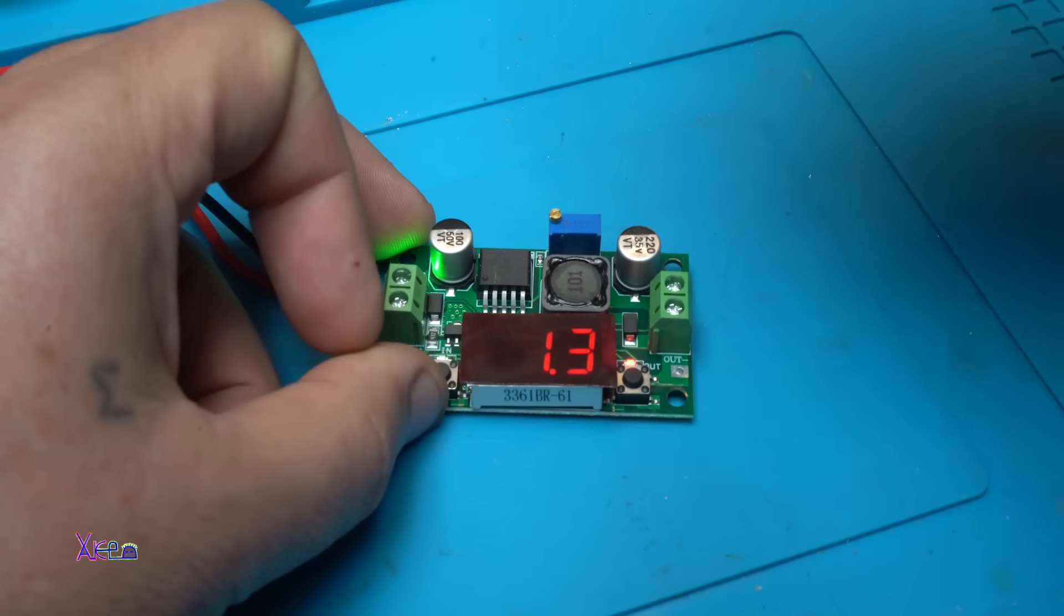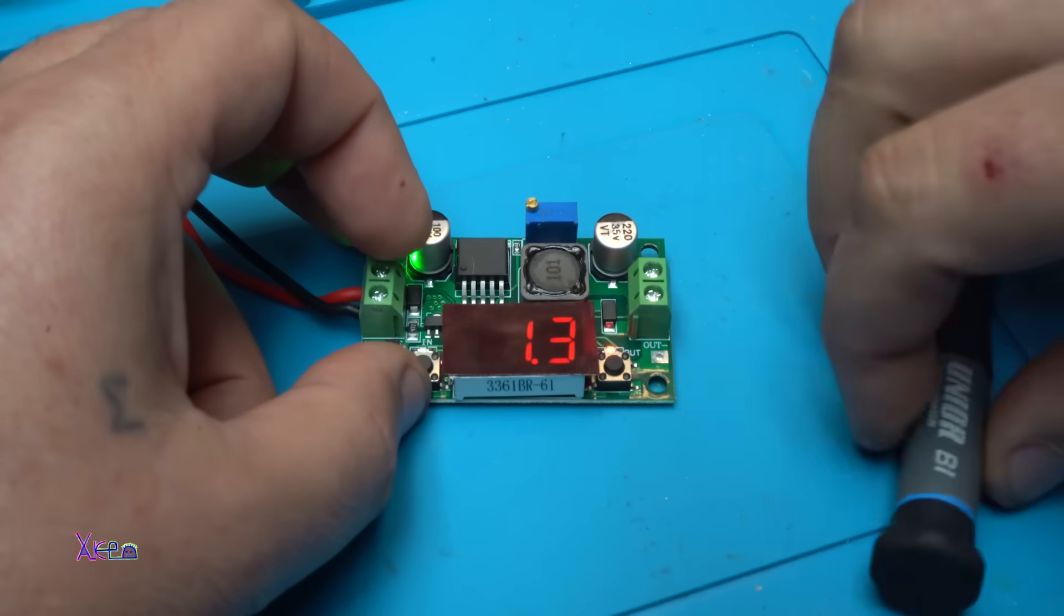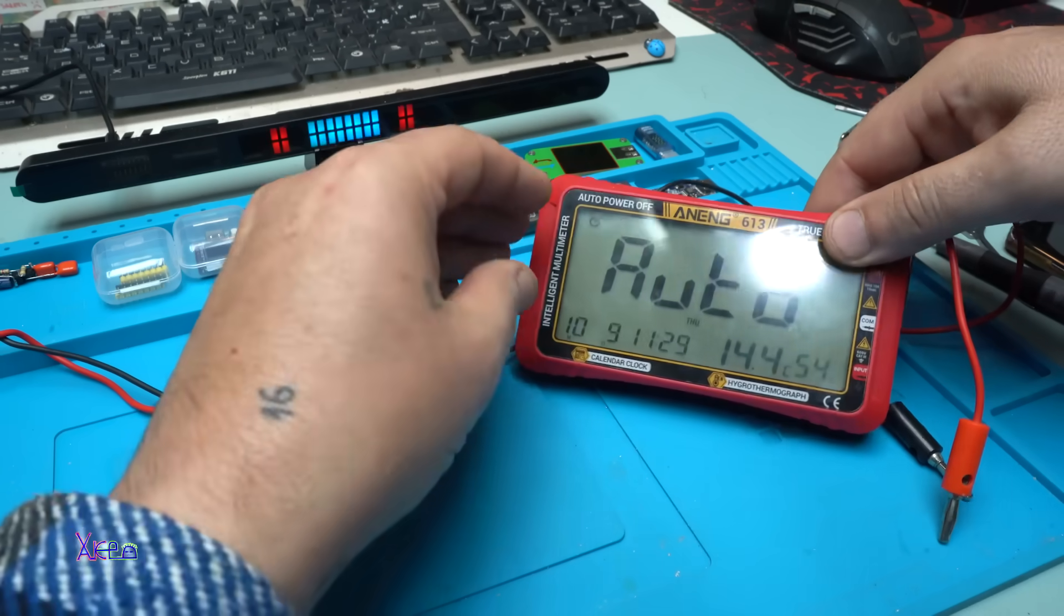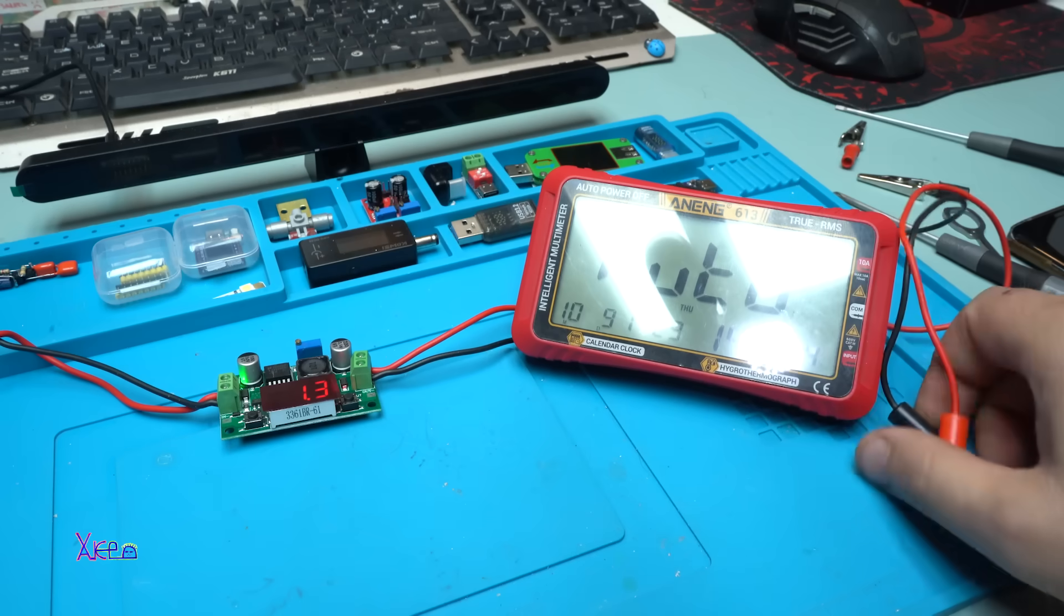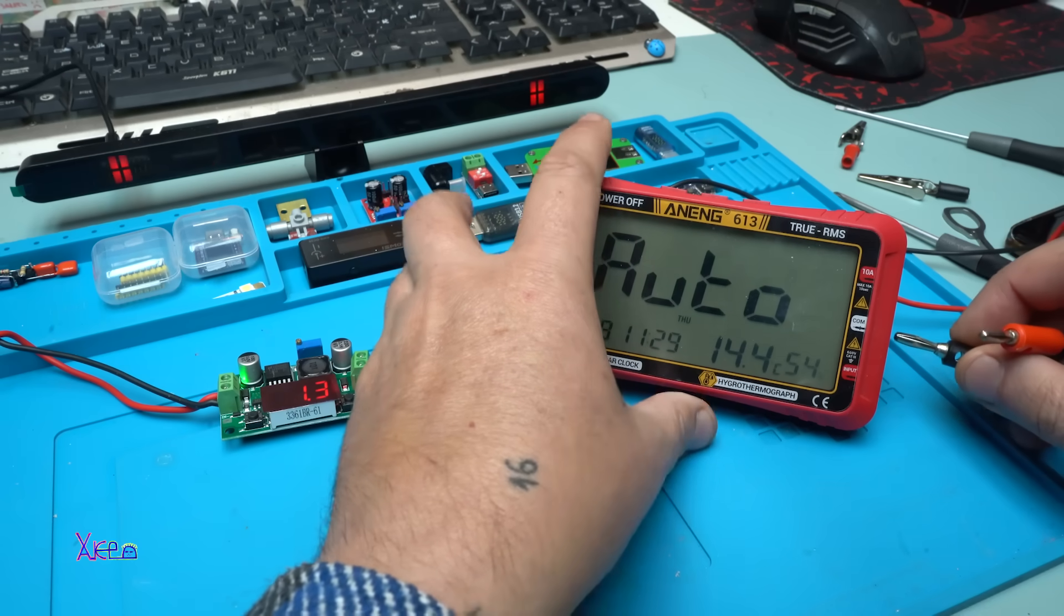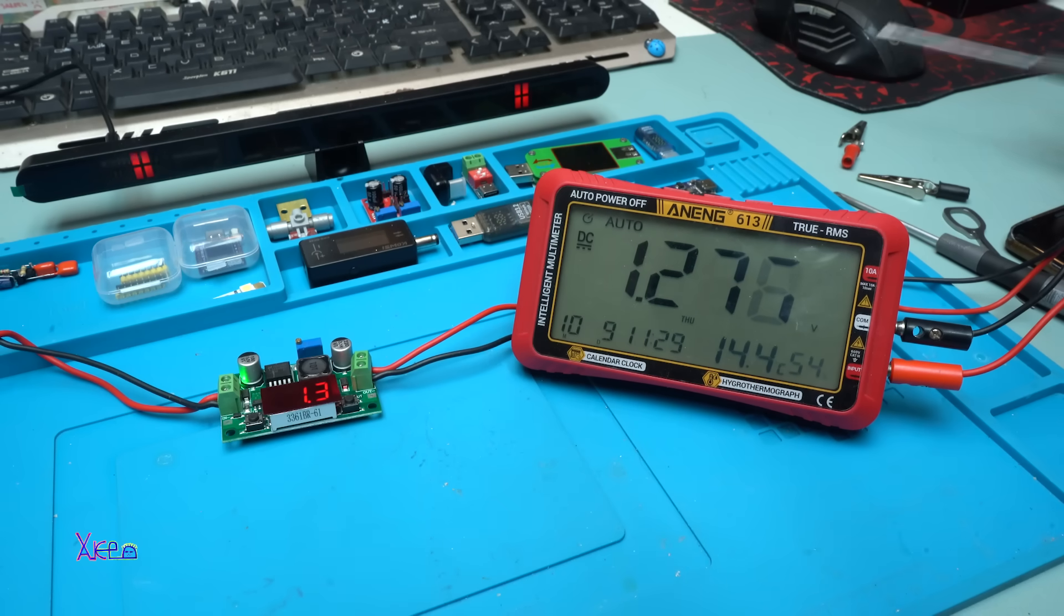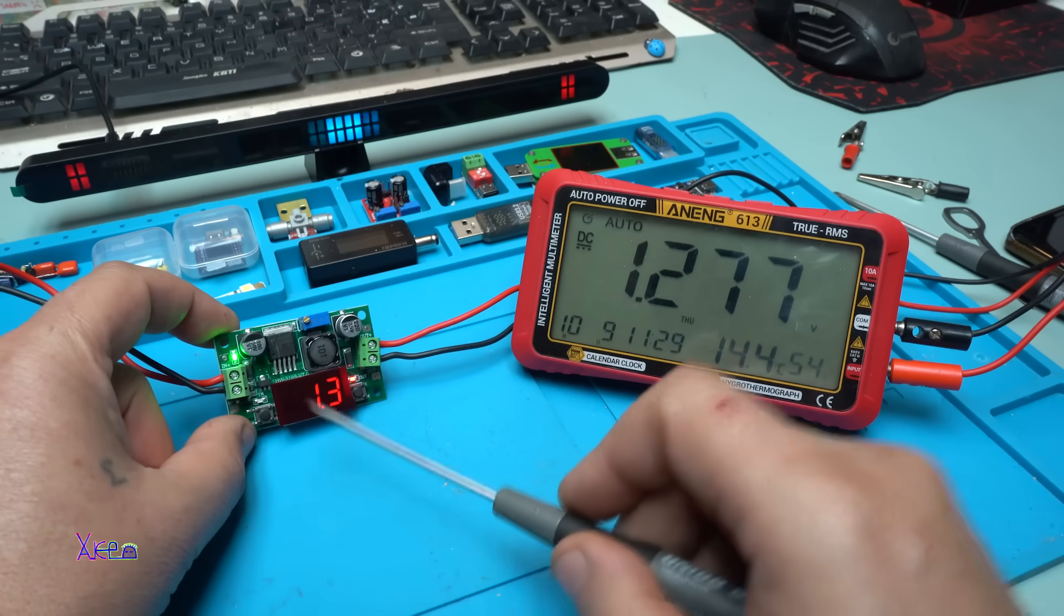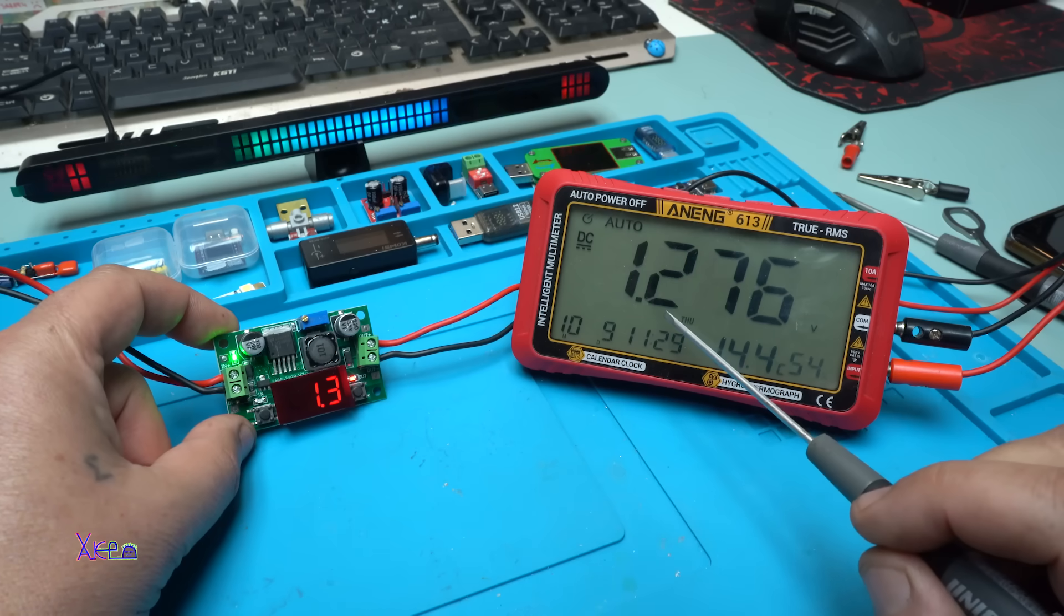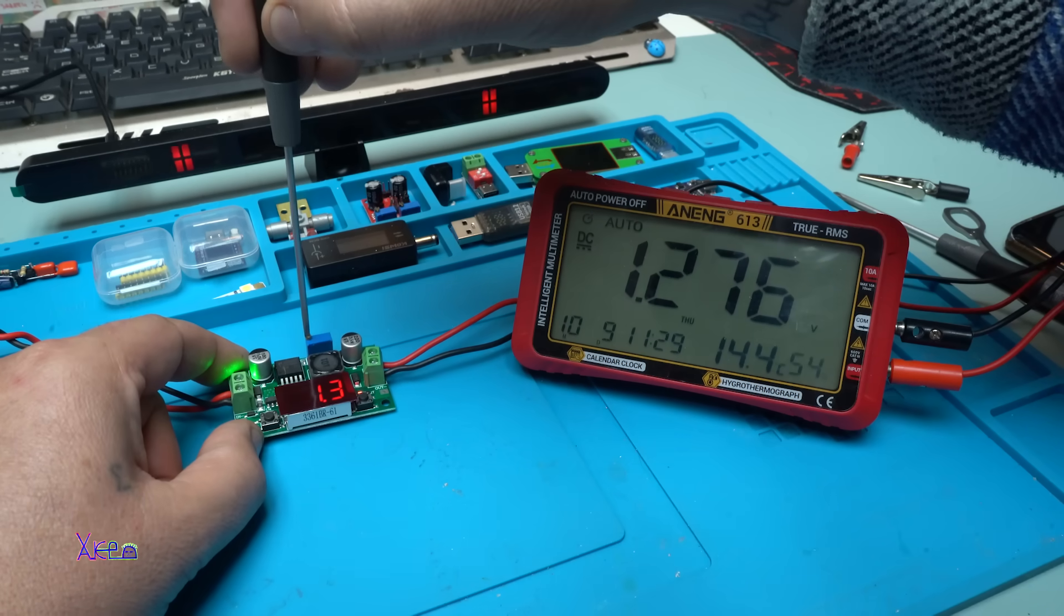Now let's increase the input voltage and hook up some load. Before I connect the load, let's see - is the voltage output the same as my multimeter? On the DC-DC converter it's 1.3 volts. On the multimeter, 1.27, which is good. Let's increase to how much voltage?